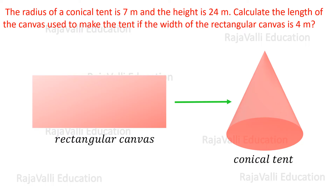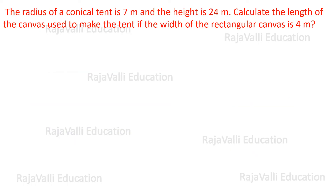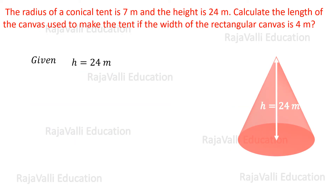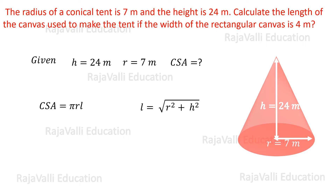The dimensions of the conical tent are given, so using the CSA of the conical tent we can calculate the length of the rectangular canvas. The given values are the height and radius of the conical tent. The CSA formula is π r l, but l (slant height) is not given. Using height and radius we can calculate it.